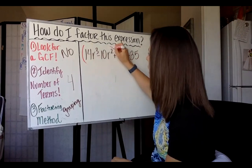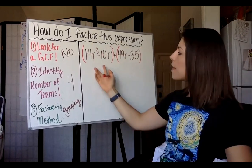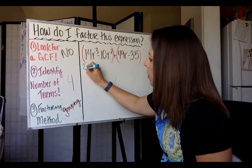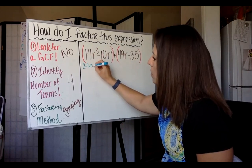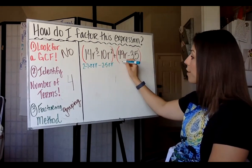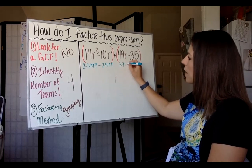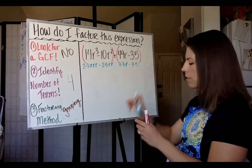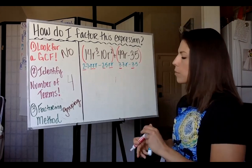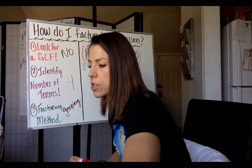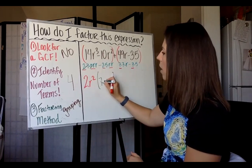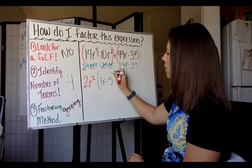We start by grouping the first two terms together and the second two together, then do GCF factoring in both groups. The greatest common factor of 14 and 10 is 2: 14 is 2 times 7, and R cubed is R times R times R; 10 is 2 times 5, R squared is R times R. The greatest common factor of 49 and 35 is 7: 49 is 7 times 7, and 35 is 7 times 5. In the first group we factor out 2R squared, leaving 7R minus 5.